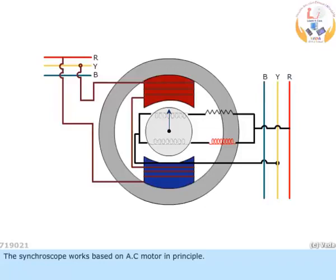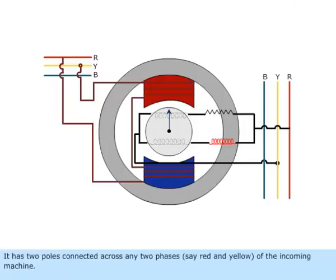The synchroscope works based on AC motor principle. It has two poles connected across any two phases, say red and yellow, of the incoming machine.